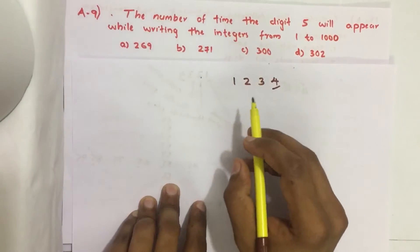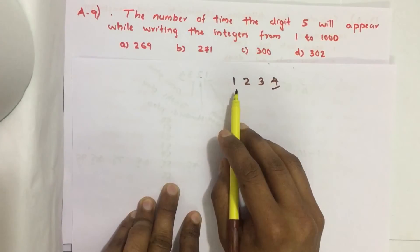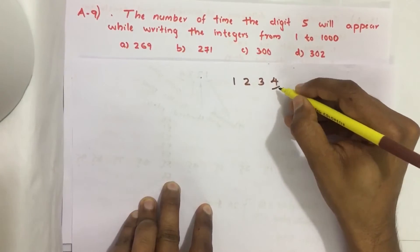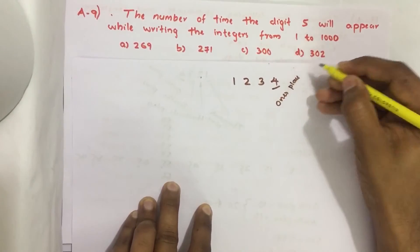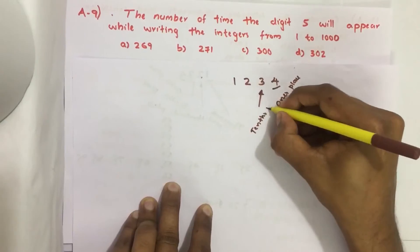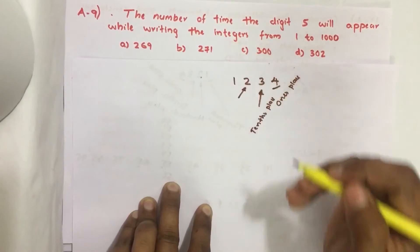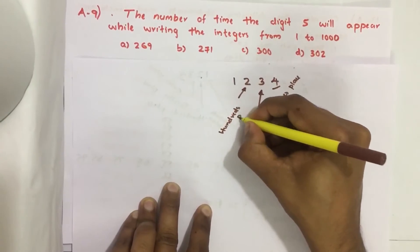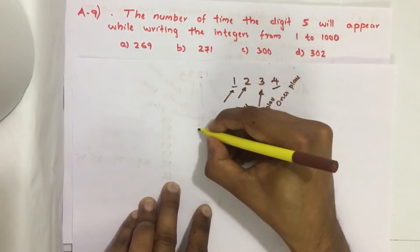So before solving this example you need to know the following. Consider a 4 digit number 1234. The place where this digit 4 is called 1's place. And the place where this digit 3 is called 10's place. The place where this digit 2 is called 100's place, and the place where the digit 1 is called 1000's place.